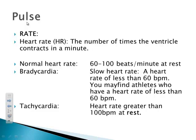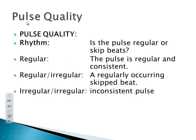If someone has a heart rate greater than 100 beats per minute at rest, we say that patient is tachycardic. For pulse quality, we look at the rhythm — is the pulse regular or does it skip beats? If it's regular, the pulse is consistent. If it's regularly irregular, there is a regularly occurring skipped beat. If it's irregular, then it's inconsistent.